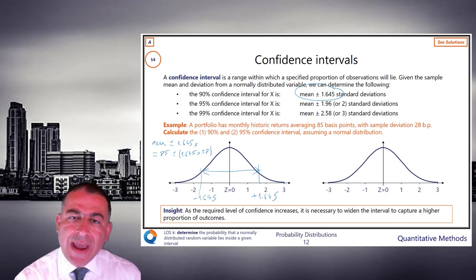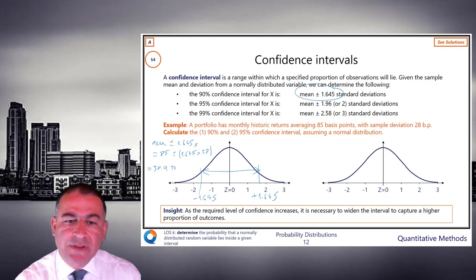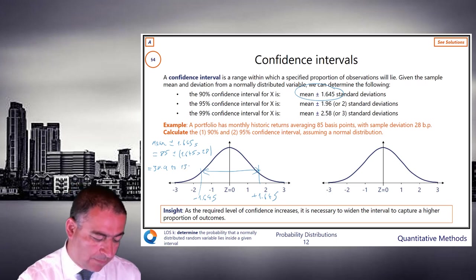And so the lower end of that range is 85 minus 1.645, which is about 38.9. And the upper range is 85 plus 1.645, which is 131.1. And there's our answer.